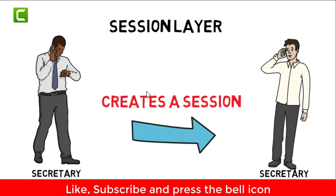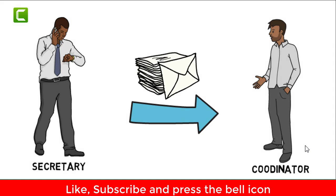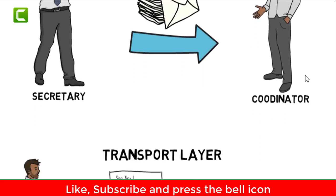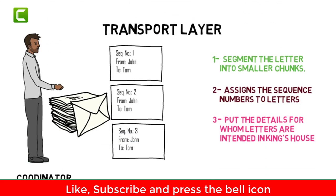Since the minister is at a very high post, he calls his secretary and passes on the work. The secretary, knowing the importance of the letter, calls the French palace and tells the French secretary that they are going to send a very important letter, asking to be acknowledged upon receipt — starting a session. The secretary then passes the letter to a coordinator, who breaks it into smaller chunks, attaches sequence numbers for ordering, and writes the name of the intended receiver at the French palace. At this point the letter is still moving inside the Arab palace.